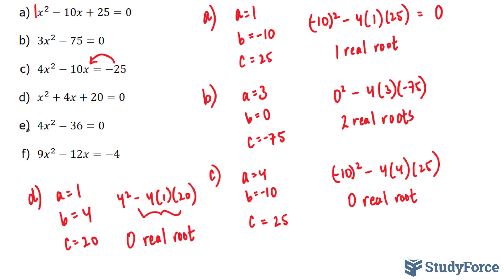Moving on to e. Let's see if I can squeeze this in down here. Here, our a term is 4. Our b term is missing, so it's zero. And our c term is negative 36.